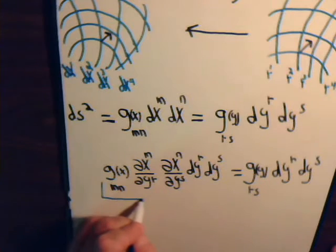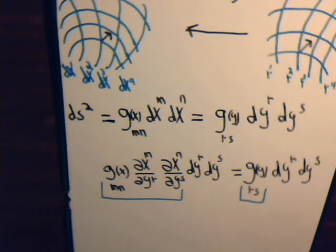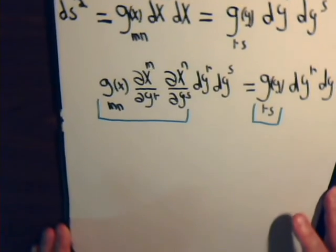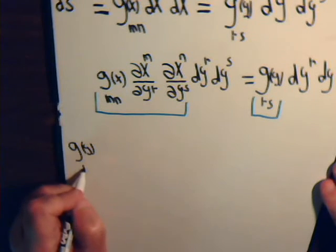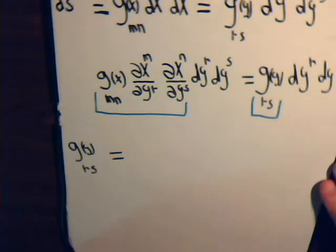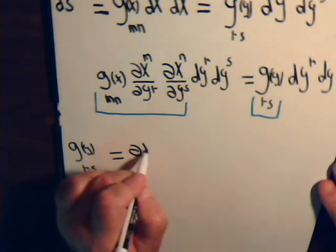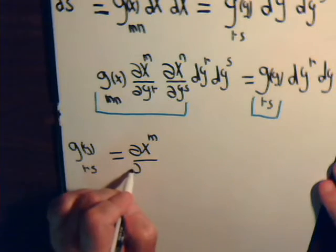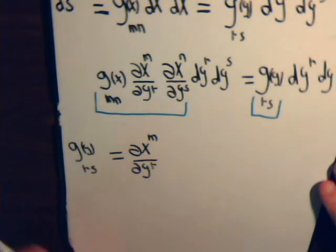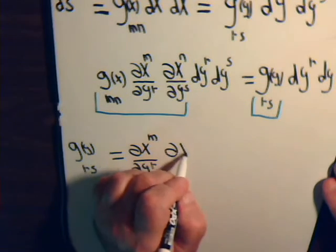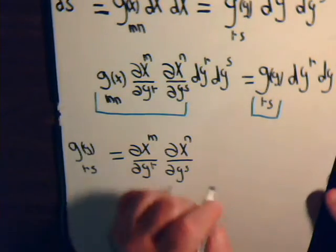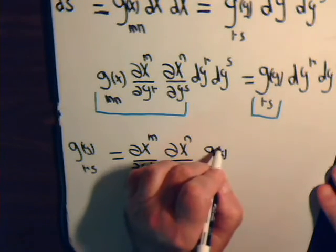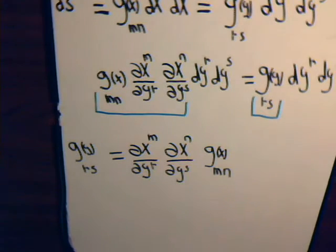So, that clearly implies, then, that this and this are the same quantity. So, let's write it out. We have g_y rs equals the partial of x^m with respect to y^r, the partial of x^n with respect to y^s, times g_x mn.